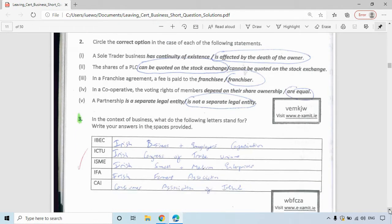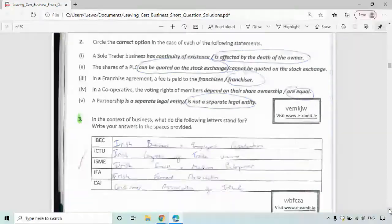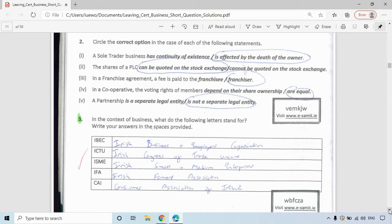Question three, then, these are interest groups in unit one. So what do they stand for? IBEC is Irish Business and Employers Confederation. ICTU is the Irish Congress of Trade Unions. ISME is Irish Small and Medium Enterprises. IFA is the Irish Farmers Association. And CAI is the Consumer Association of Ireland.